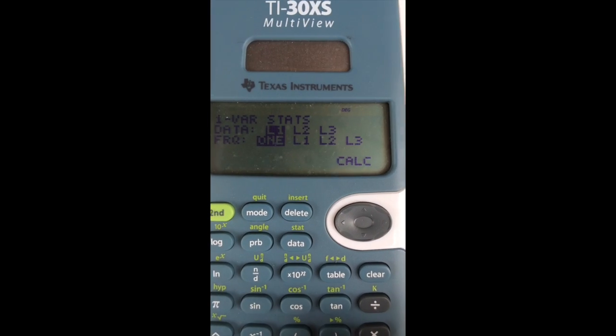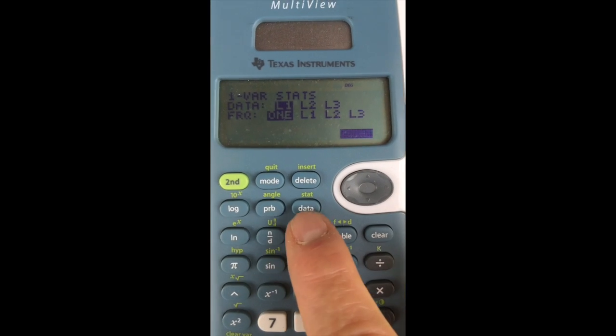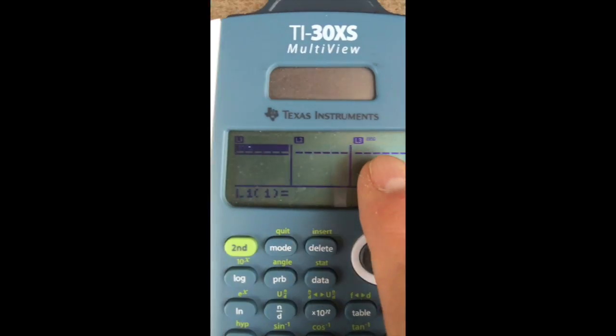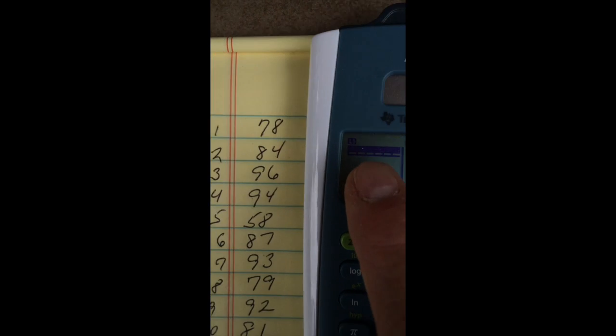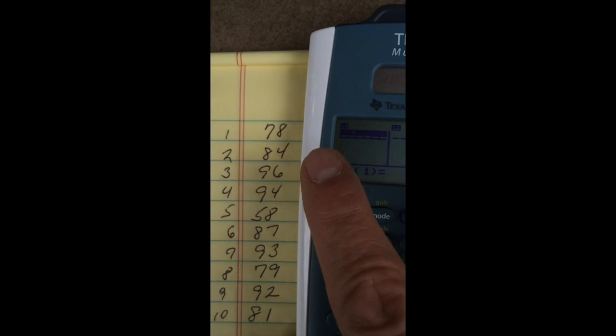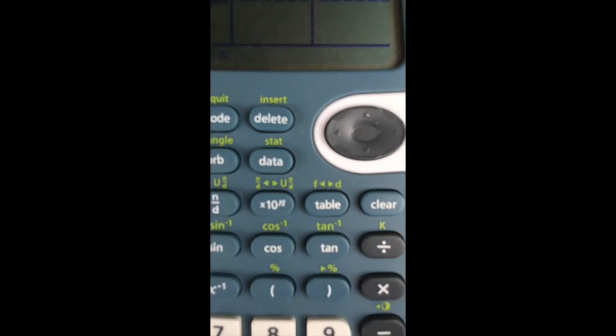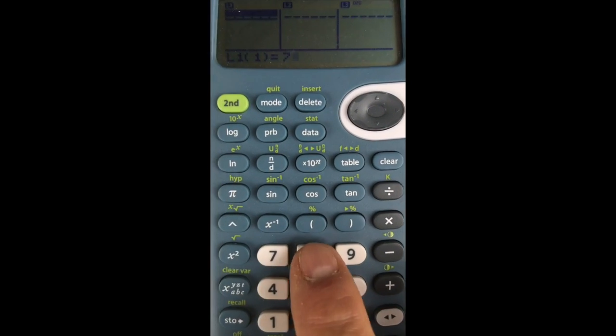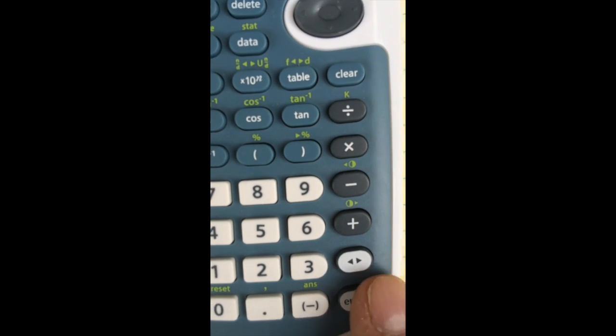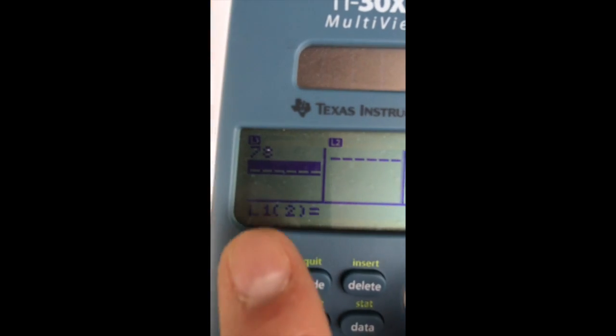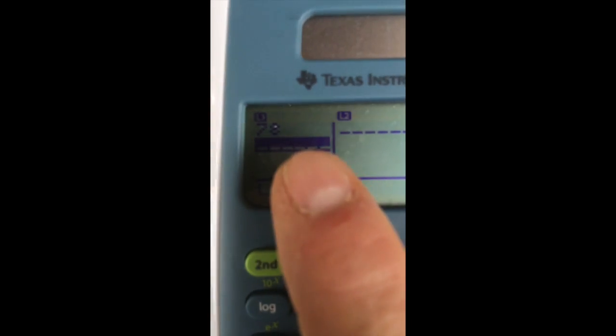So now I have to give it data. So I type data. And you see here are the three columns. And all I have to do now is enter these test grades. So I've got 78, 78, I think I can just hit enter, yep, and see how that put the 78 in the window here.